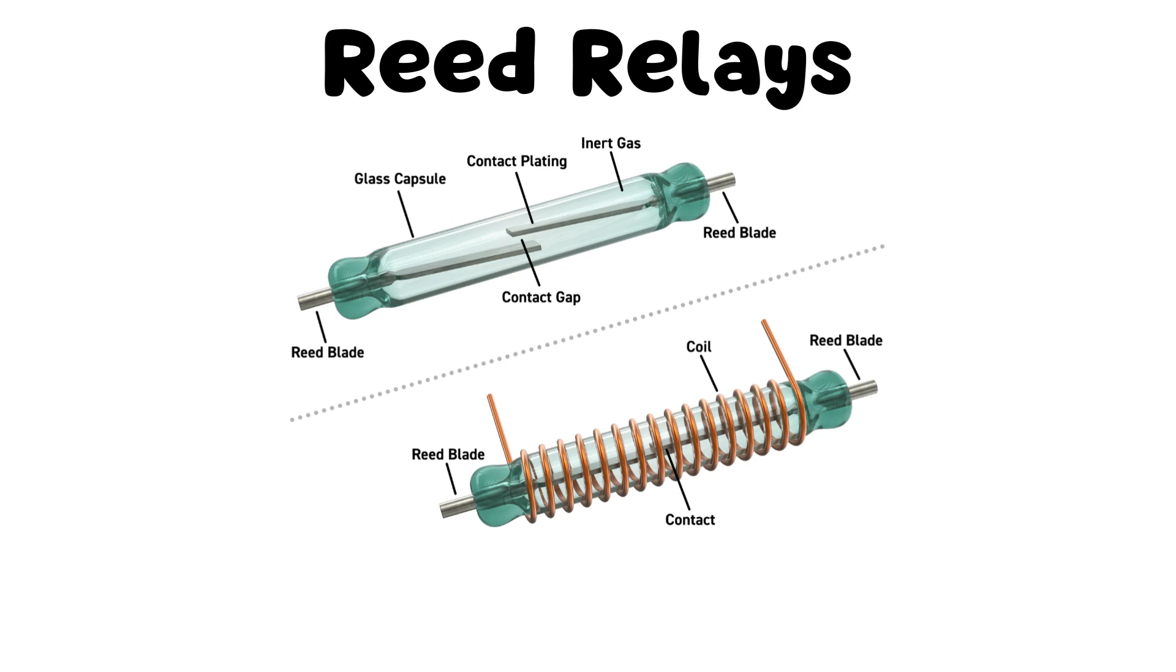Reed Relays: Reed relays consist of reed switches enclosed in a glass tube and are activated by a magnetic field. When the coil is energized, the magnetic field causes the reeds inside the tube to make or break contact. Reed relays are compact, have high switching speeds, and are often used in applications where low-level signals or precise switching is required.